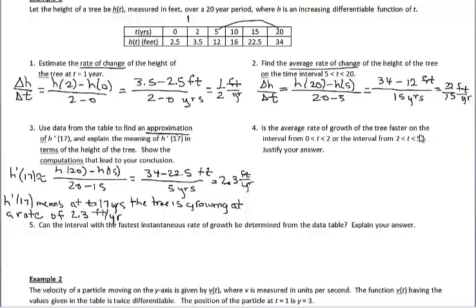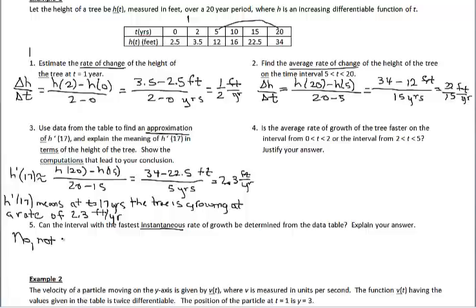We'll skip number 4 — it's just a comparison of average rates of change on two different time intervals; the work shown verifies which interval gives a faster average rate of growth. For number 5: can the interval with the fastest instantaneous rate of growth be determined from the data table? The answer is no — we can't find the fastest instantaneous rate of growth because not all h(t) values are given to us, nor do we have an equation for h(t).